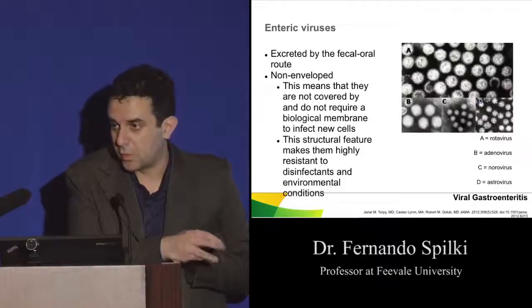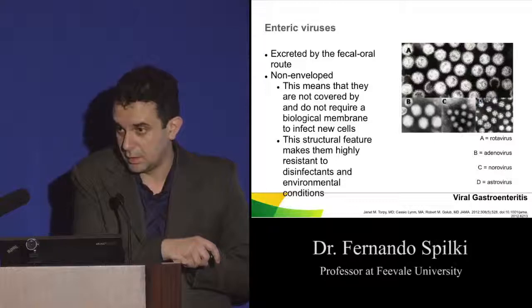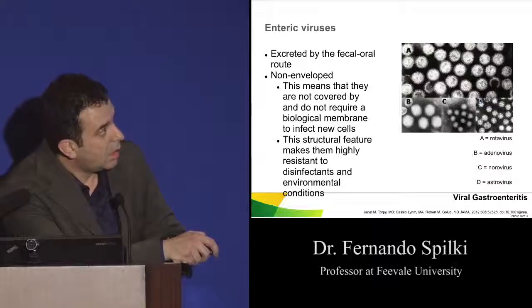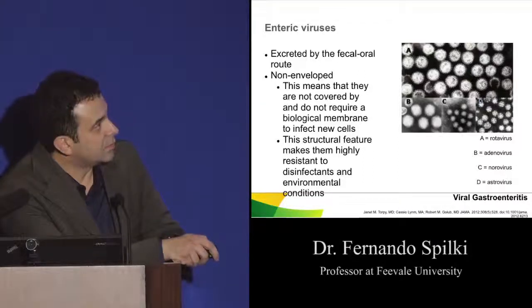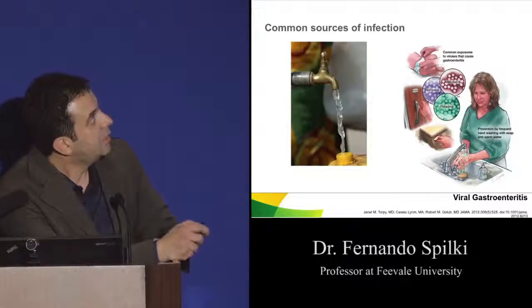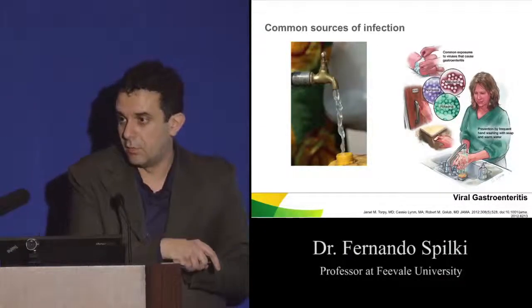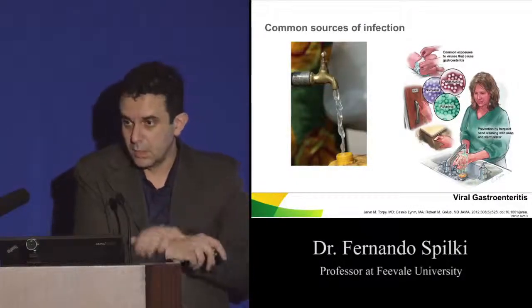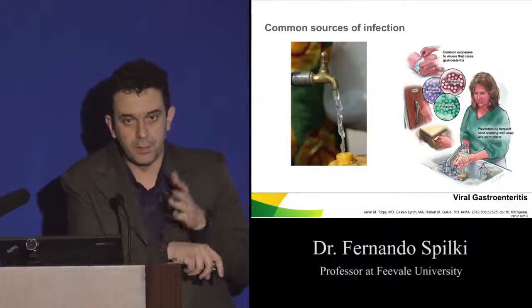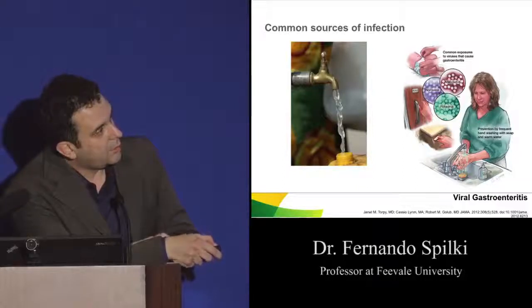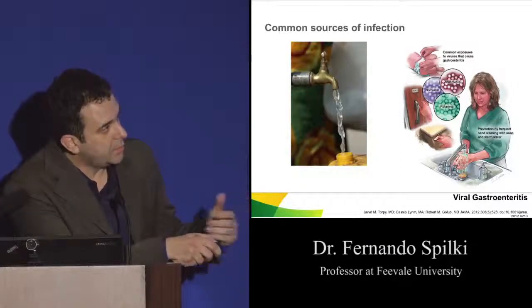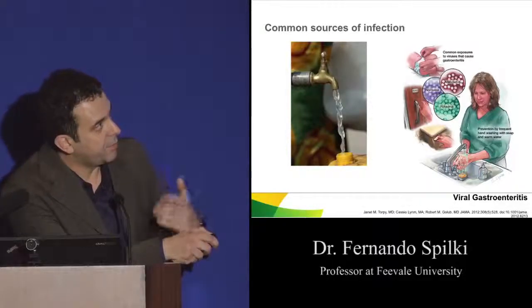They are very important causes of gastroenteritis. One of the most important is rotavirus. Rotavirus is responsible for more than half of the gastroenteritis cases in children below five years old. There are many others that could cause gastroenteritis not only in children but also in adults. The major sources of infection for enteric viruses are water — both bottled mineral water or tap water — and food contaminated by water used for irrigation or cleaning.